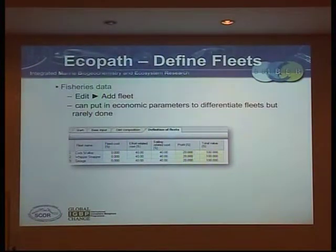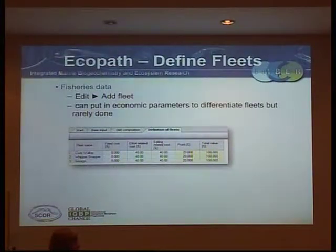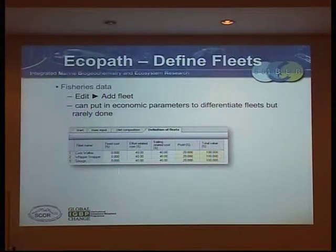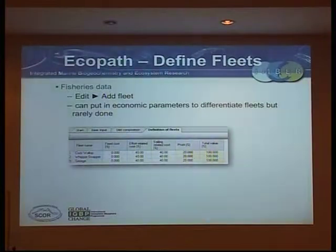So we've got the cods wall, the whipper snapper, which just means pretty fast to the fly, and then George — my daughter's favourite name was George and everything got called George. Basically you can say what their cost breakdowns are. These default values are pretty much what you see in every Ecopath model: no fixed costs, 40% of the effort is a variable cost, and basically 100% profit. Most people across all those thousands of Ecopath models won't have done the economic stuff, but we'll play with it a little bit.